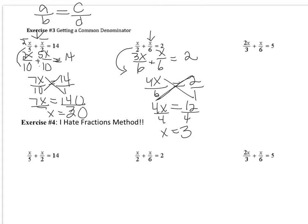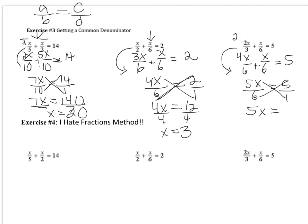Let's try one more. Here we have a sum — it could be addition or subtraction, but regardless you need a common denominator. I'm going to use 6, because 3 goes into 6 and 6 goes into 6. I'm not changing the denominator in the second fraction, so I don't need to change the numerator. But I multiplied 3 by 2 to get 6, so I multiply the numerator by 2: 2 times 2X = 4X. So 4X/6 + 1X/6 = 5X/6 = 5. Cross multiplying: 5X times 1 = 5X, and 6 times 5 = 30. Dividing both sides by 5 gives X = 6.